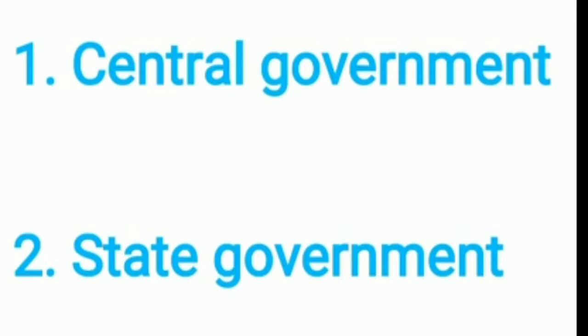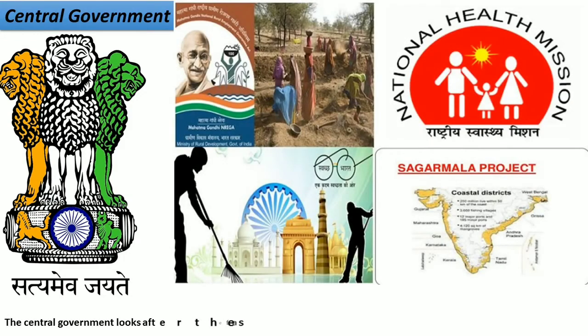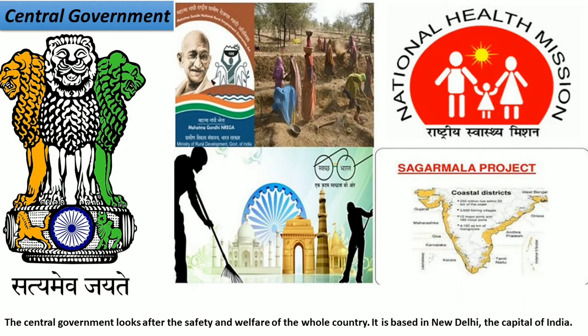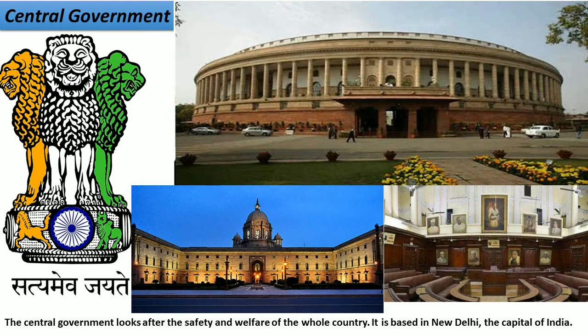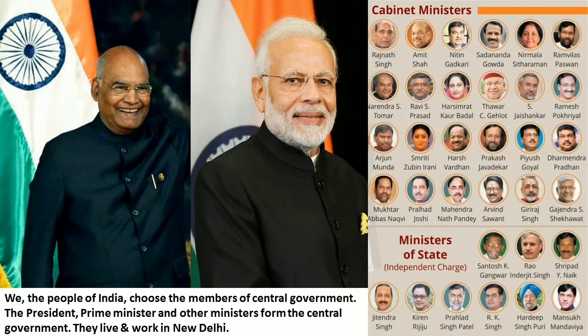In India there are two types of government: the central government and the state government. The central government looks after the safety and welfare of the whole country. It is based in New Delhi, the capital of India. We, the people of India, choose the members of the central government. The president, prime minister and other ministers form the central government. They live and work in New Delhi.